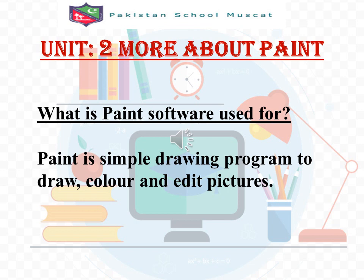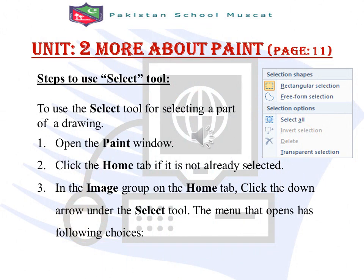Unit number two, more about Paint, page number 11. Basically we will discuss what Paint software is used for. Paint is a simple drawing program to draw, color, and edit pictures. Steps to use the Select tool: to use the Select tool for selecting a part of a drawing — number one, open the Paint window. Number two, click the Home tab if it is not already selected.